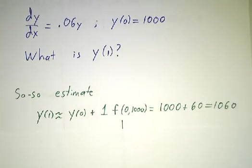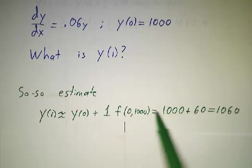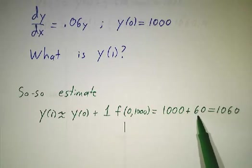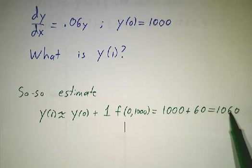And our so-so estimate was to say, it's changing at a rate of 60 and it's going for time 1, so the change will be 60 and we'll wind up at 1060.